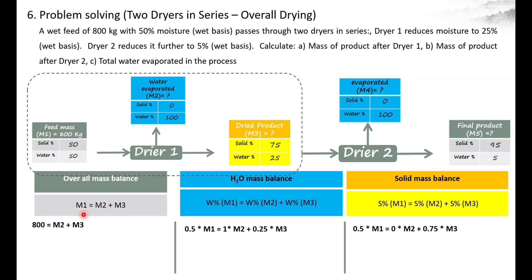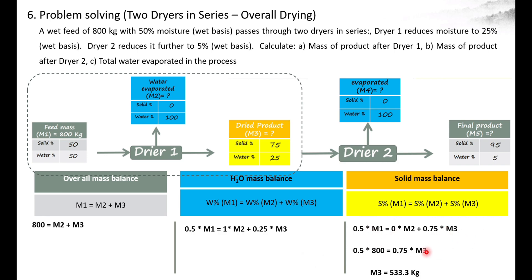Filling in the known values: M1 is 800 kg; M2 and M3 are unknown. For the water balance: water percentage in the feed is 0.5, water percentage in M2 is 100%, and water percentage in M3 (dried product from Dryer 1) is 25% or 0.25. For the solid balance: solid in M1 is 0.5, solid in M2 is 0, and solid in M3 is 0.75. Since M2 drops out, we solve for M3, which comes to be 533.3 kg.